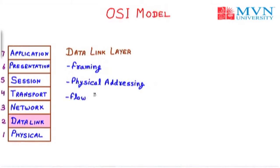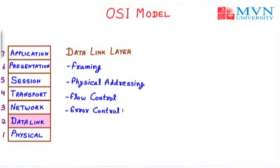The next function of the data link layer is flow control, which provides control over the flow of data transfer — for example, if sending data at 5 Mbps, flow control ensures the rate is managed whether it becomes 6 Kbps or 3 Kbps. The next feature is error control: if data packets are lost during transmission, the error control feature of the data link layer handles it. Next is access control, which provides authentication and authorization to particular users, determining what data can be sent and what access they have.